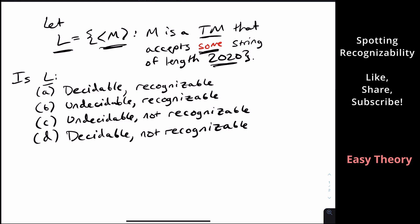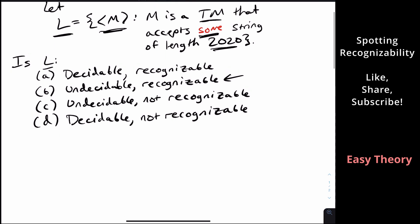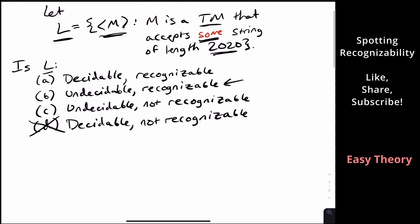So pause the video and try to figure it out for yourself. So the answer is B. So we can actually whittle down some of the answers to make this a little easier for ourselves. So let's see, how can we get rid of some of the other ones?